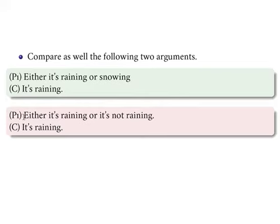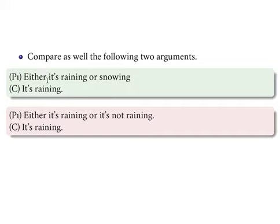But in the second argument, if all I know is that either it's raining or it's not, I don't really know anything, because no matter what, it's always raining or it's not. So that really doesn't make it likely that it's raining. Here again we have two invalid arguments where one is actually better than the other — better in an inductive sense, in a probabilistic sense — in the sense that 'either it's raining or it's snowing' makes it probable that it's raining, in a way that 'either it's raining or it's not raining' does not.